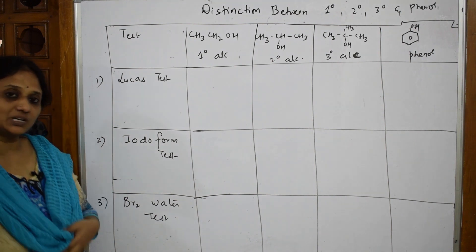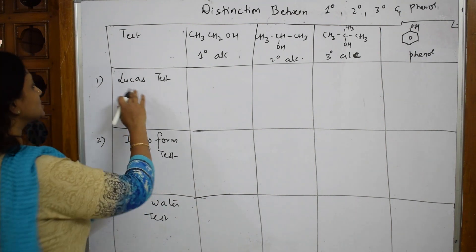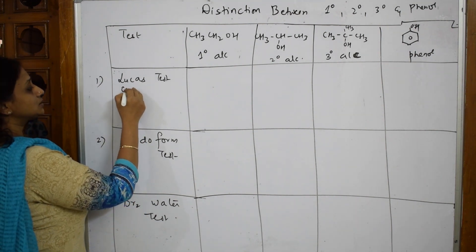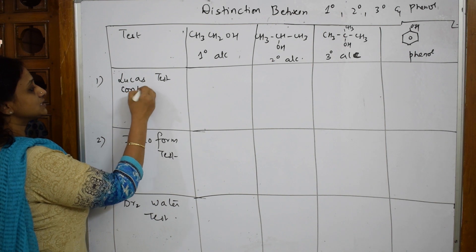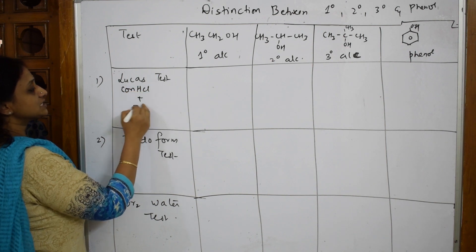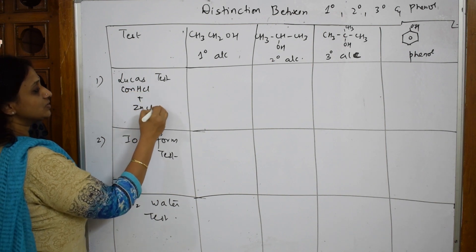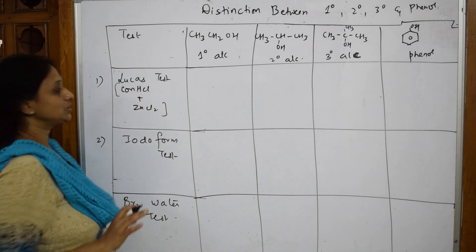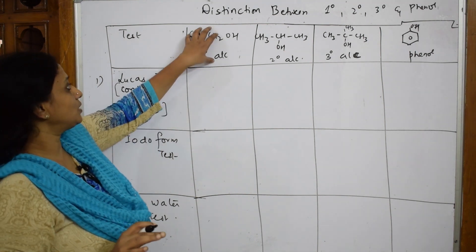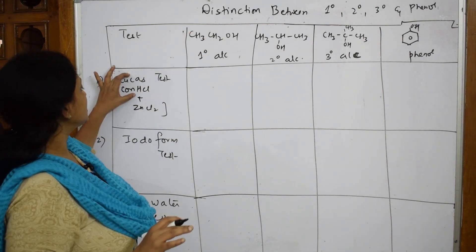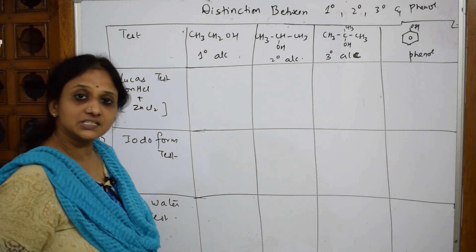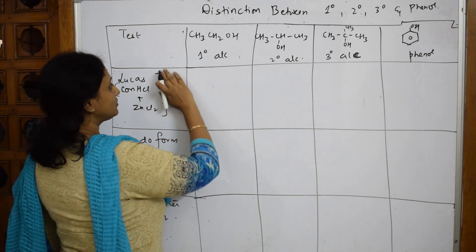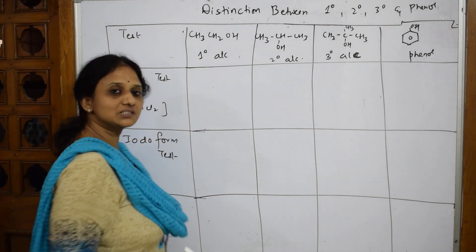The first test is Lucas test. Lucas test involves taking concentrated HCl with anhydrous ZnCl₂ — you mix these together. You take the compound with HCl and anhydrous ZnCl₂, and you observe turbidity. Whenever you write Lucas test results, you write them in terms of turbidity only.